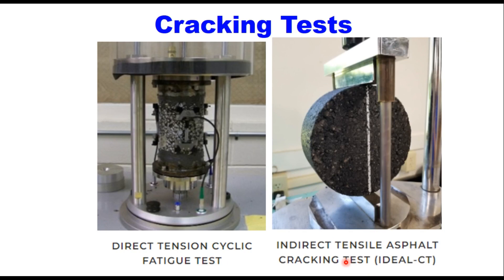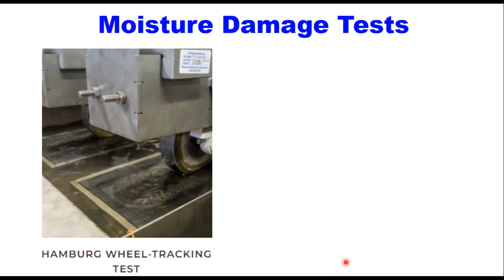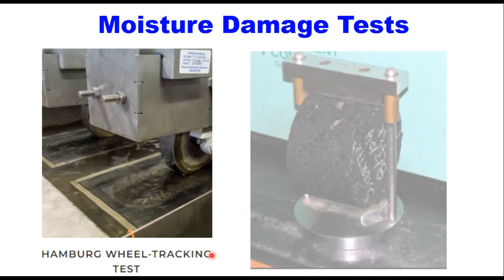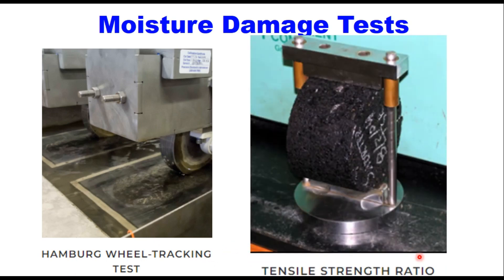The choice of test depends on equipment availability and specifications in the country. The moisture damage test can be performed using either the Hamburg wheel tracking test or the tensile strength ratio (TSR) test — the most popular option — where you determine TSR of conditioned and unconditioned specimens. There is a separate video available on determination of TSR of bituminous mixes.